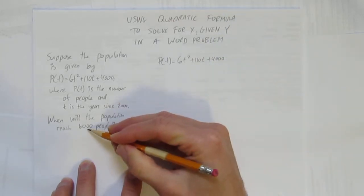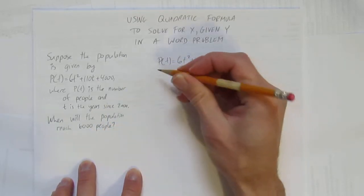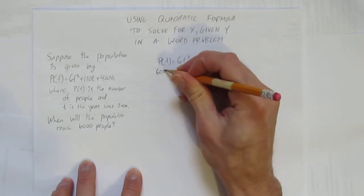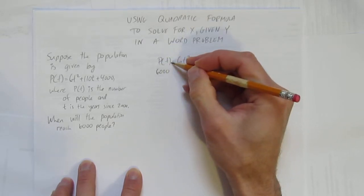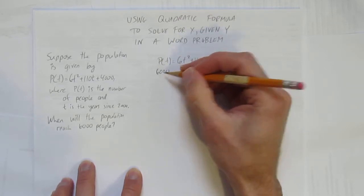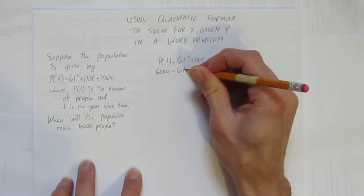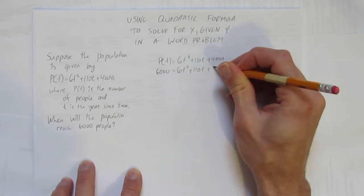I want to find out when the population reaches 6,000. The population is P(t), so I'm going to replace this population—remember, this whole thing is a y value, the population at t—so when will this whole population be 6,000? Sub in 6,000 for the y value and rewrite the rest of the equation.